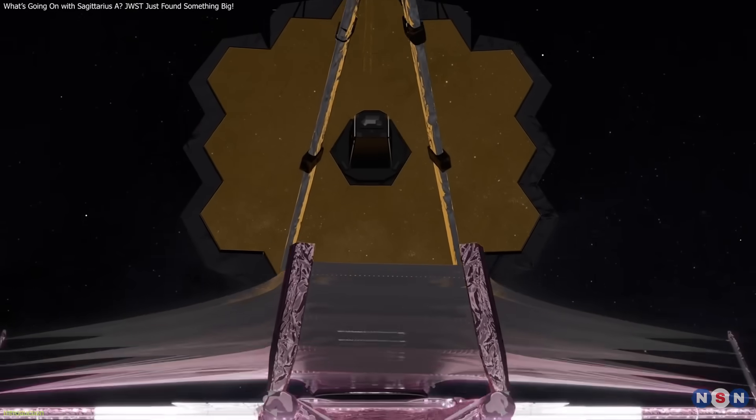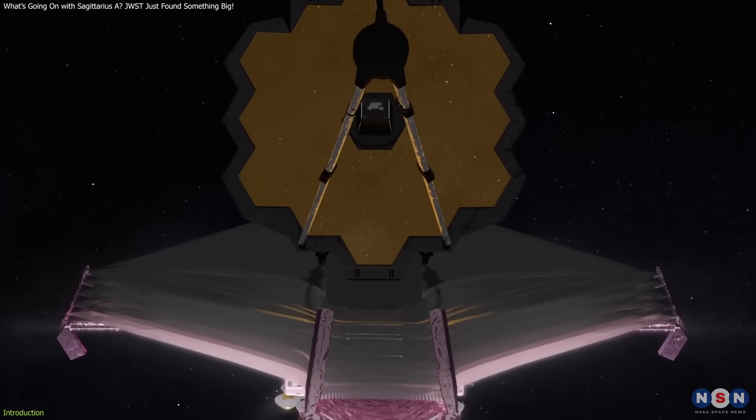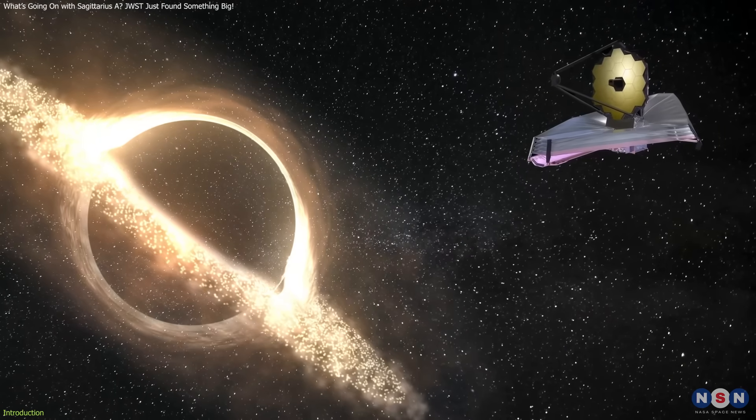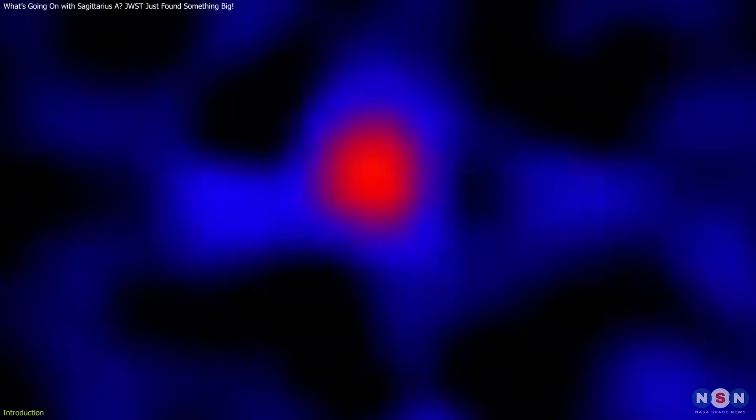Recent observations using the James Webb Space Telescope have unveiled a mesmerizing and unexpected phenomenon. Sagittarius A-star is emitting a continuous and dynamic display of flares akin to a cosmic fireworks show.